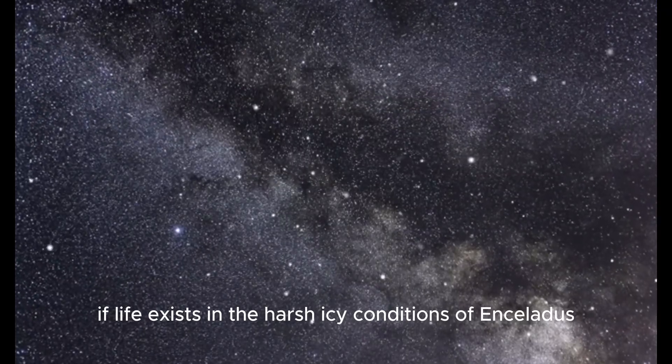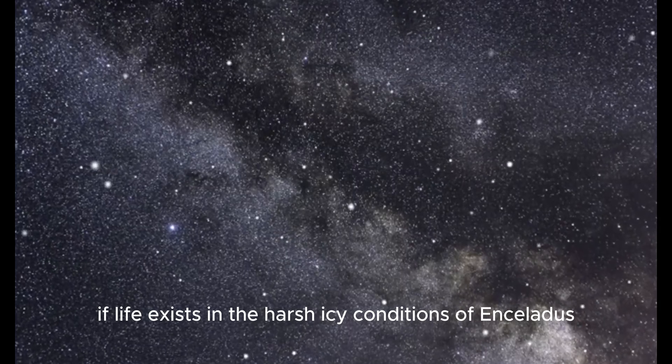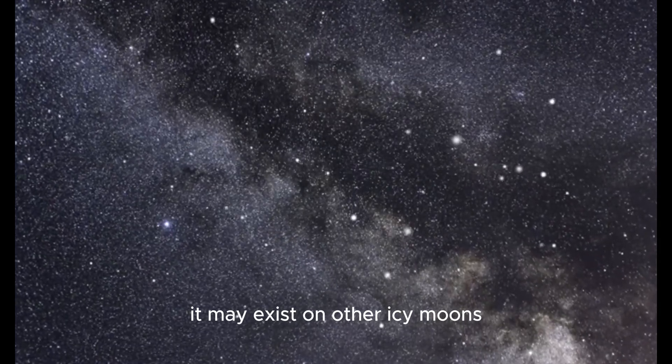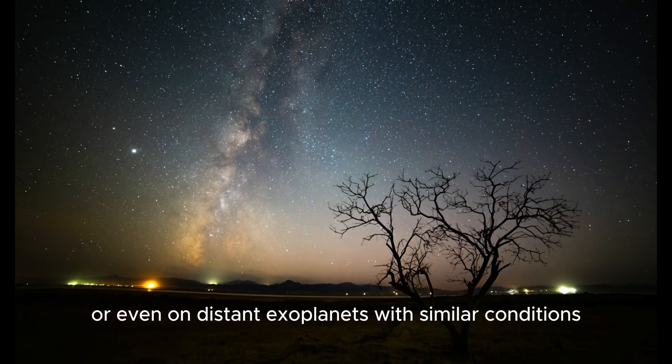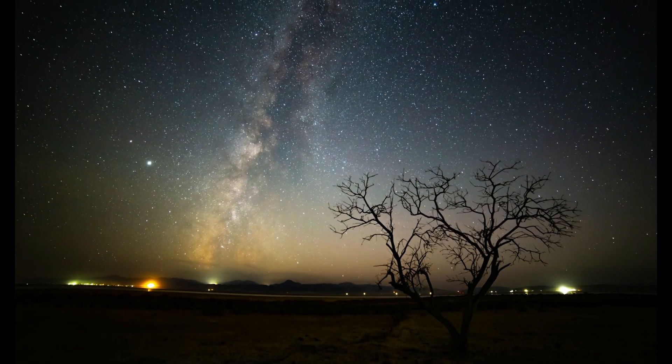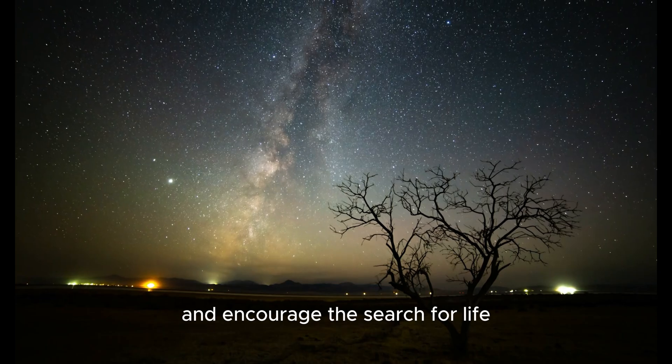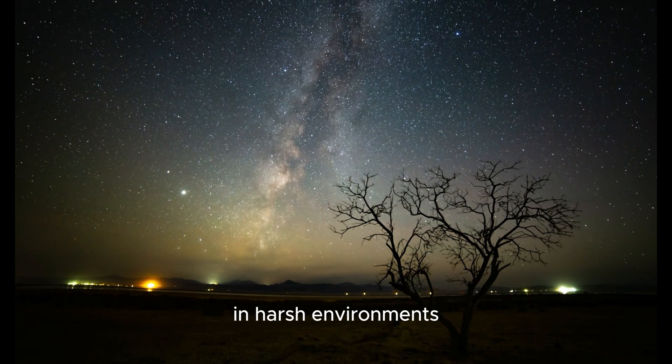If life exists in the harsh, icy conditions of Enceladus, it may exist on other icy moons such as Jupiter's Europa, or even on distant exoplanets with similar conditions. This will expand the field of astrobiology and encourage the search for life in harsh environments.